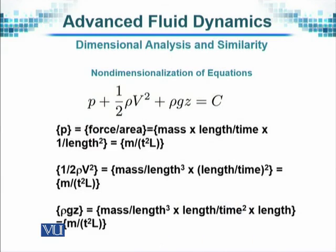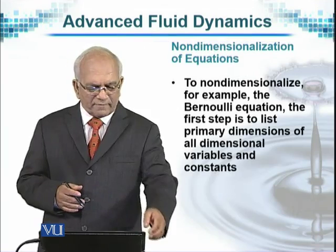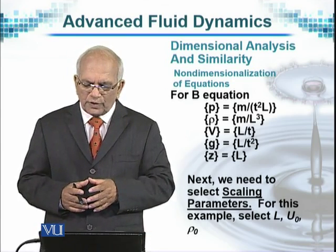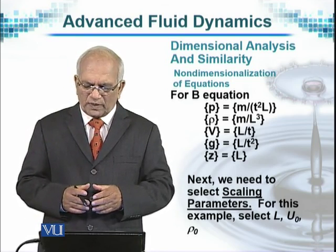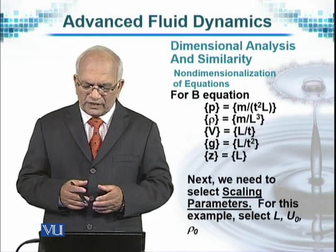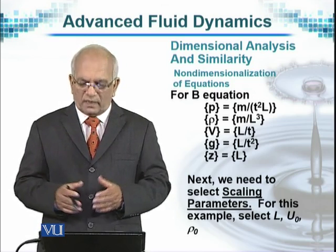For example, the most common equation we consider while discussing fluid dynamics is Bernoulli's equation. The three terms that occur here are pressure, velocity, and gravity, and of course the right-hand side is a constant. The relevant dimensions are given, and we try to non-dimensionalize them by dividing with the relevant parameters. P has dimensions of M over T squared into L, rho is M over L cubed, and V, G, and Z are indicated accordingly.